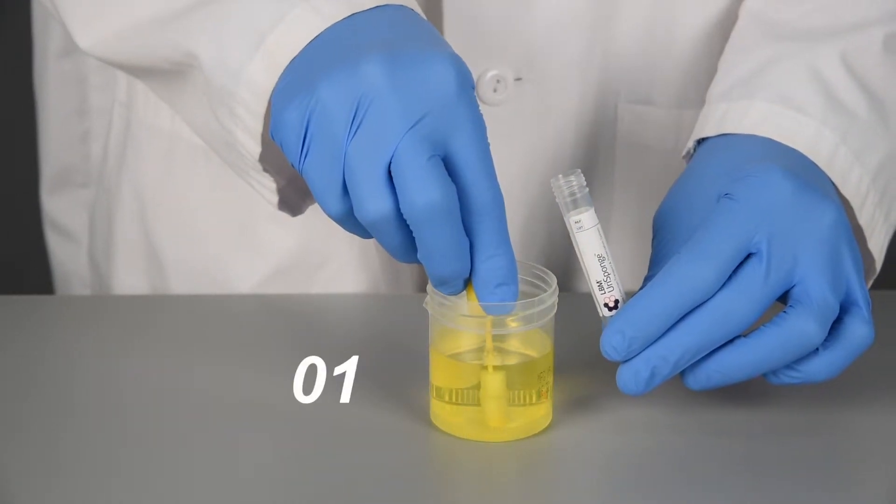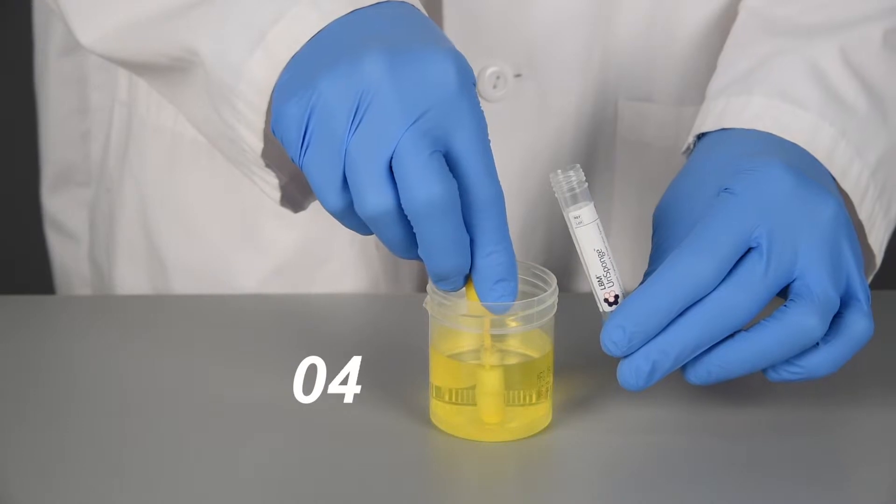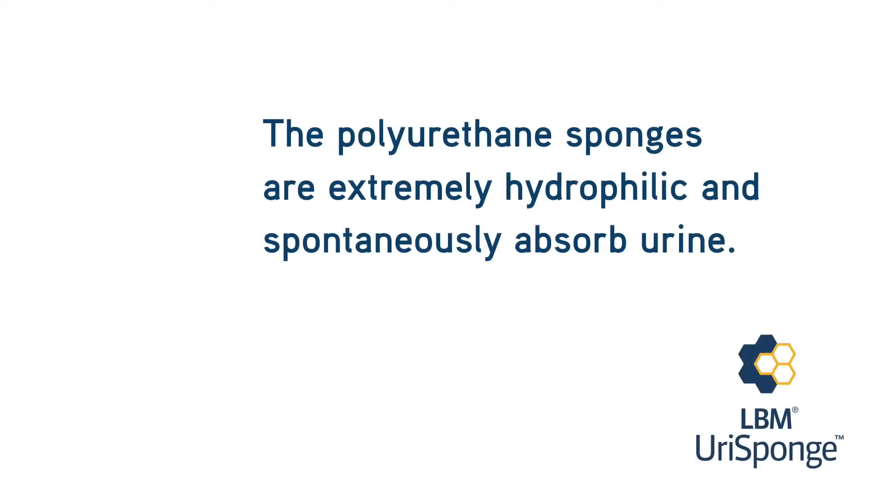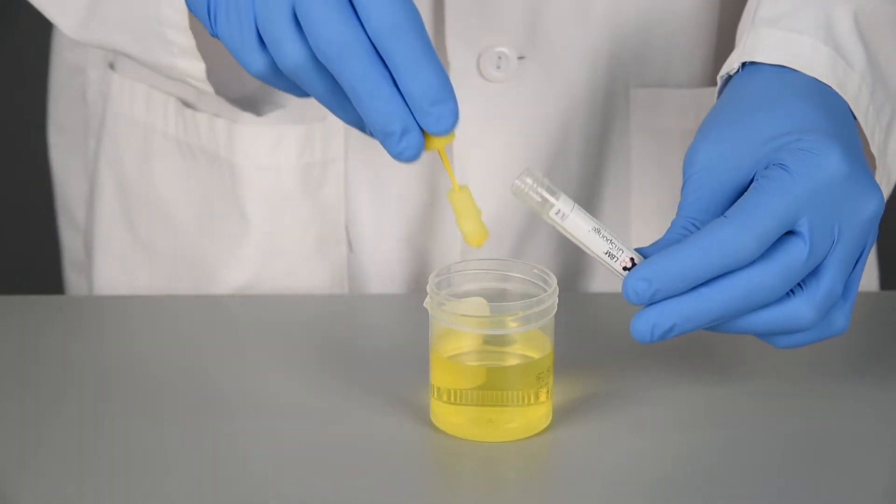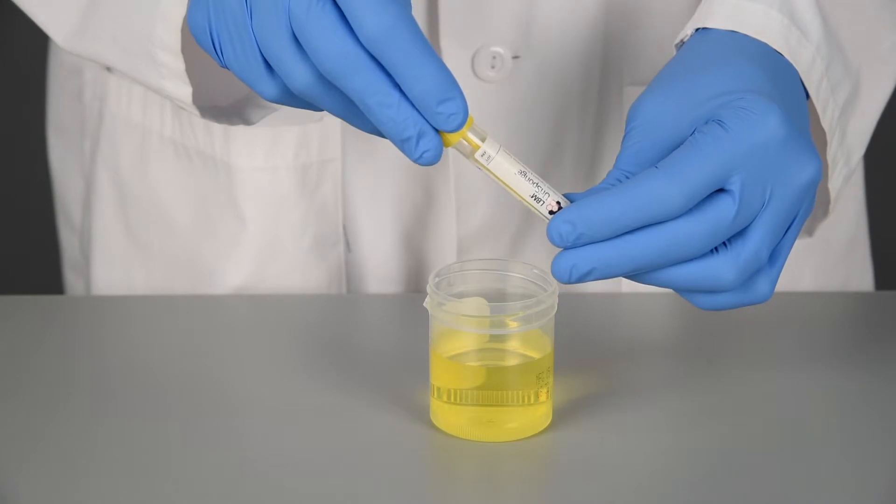Submerge the sponges for five seconds. The polyurethane sponges are extremely hydrophilic and spontaneously absorb urine. Remove the sponge applicator from the urine sample and return it to the Uri sponge tube. Do not add urine to the tube other than the urine spontaneously absorbed by the sponge.